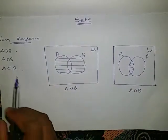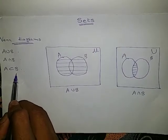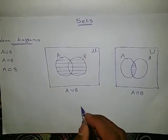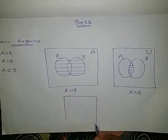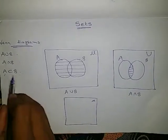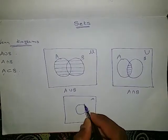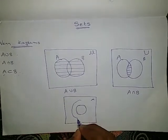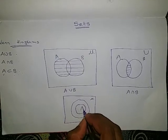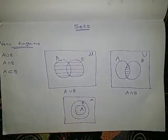Then next, A is a subset of B. A is a subset of B means A is smaller than B. In the universal set, A is smaller, so draw one circle inside and one outside. The circle which is inside becomes A and the outside one is B. So A is a subset of B.